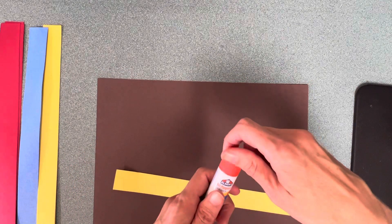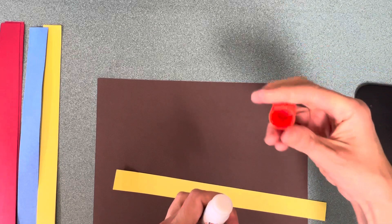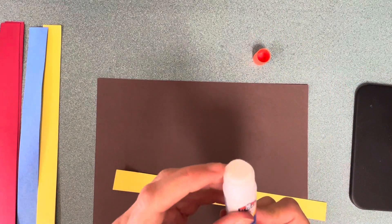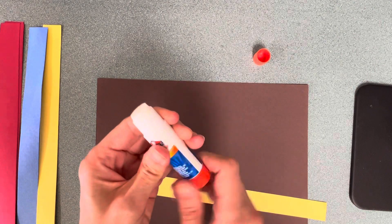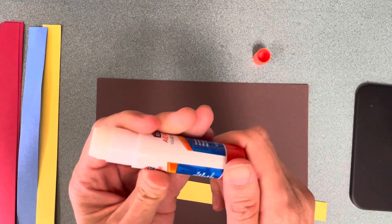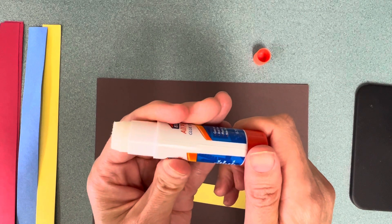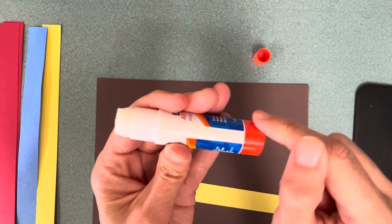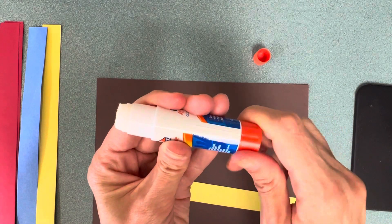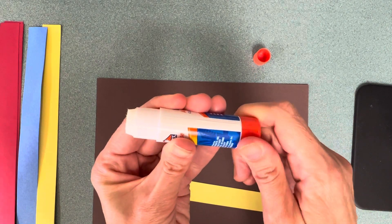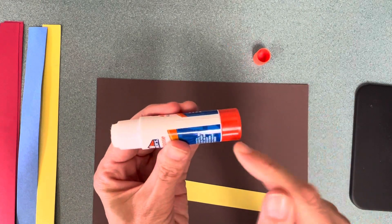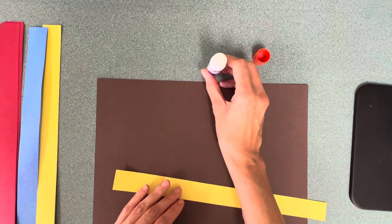To get my glue stick ready, take the top off and then I'm going to make sure there's just a little bit of glue showing. Not a lot of glue showing. Oh gosh, if you have a lot of glue showing the glue can break. So I use the wheel at the bottom and I could twist it to make the glue go up or down. You want just a little bit of glue showing.